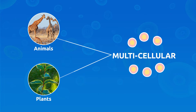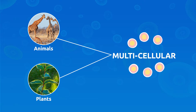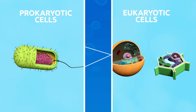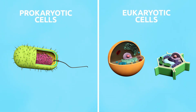Multicellular organisms are made up by a large number of cells. Trees, animals, or human beings are multicellular organisms. Based on their structure, cells are grouped into prokaryotic and eukaryotic cells.